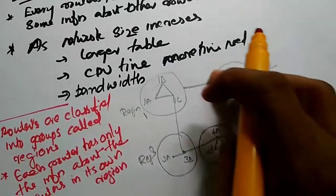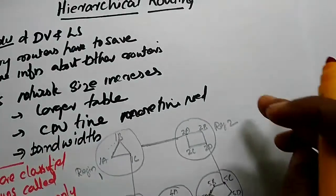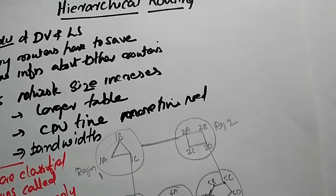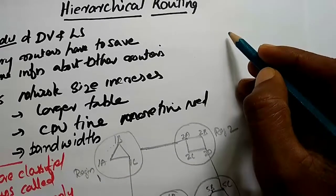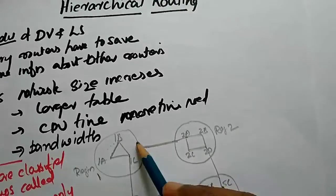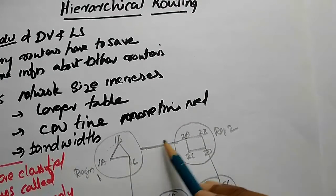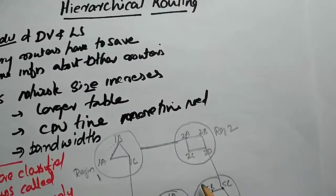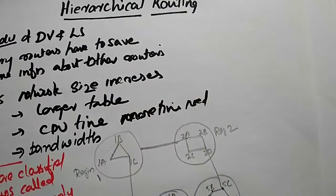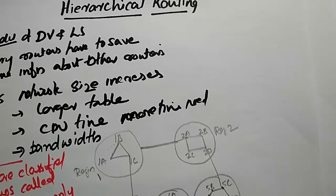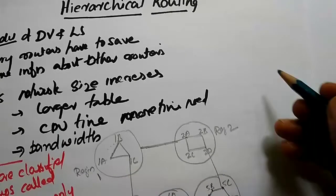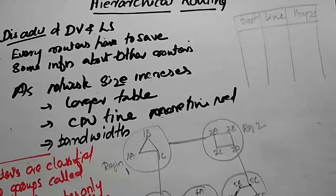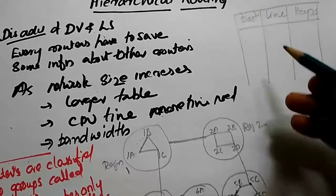We are going to look at a hierarchical routing figure. What are the routing tables? We are going to use the routing table. The first information we use is for router 1A — 3 routers' information. With hierarchical routing, we need to use region 1 and region 1A.